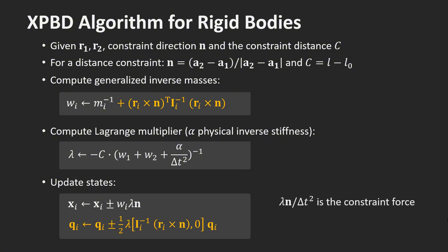In position-based dynamics, we do not work with forces. However, in certain situations, we might be interested in the force acting on the constraint. Fortunately, it is straightforward to compute this force as lambda times n divided by delta t squared.